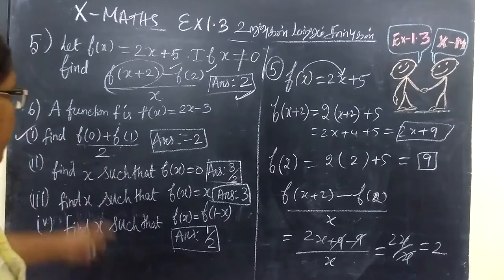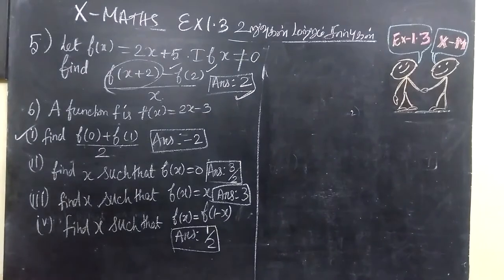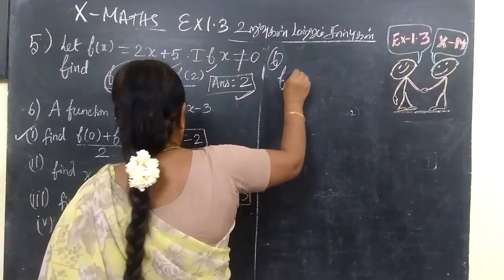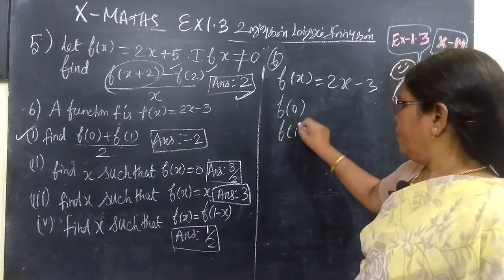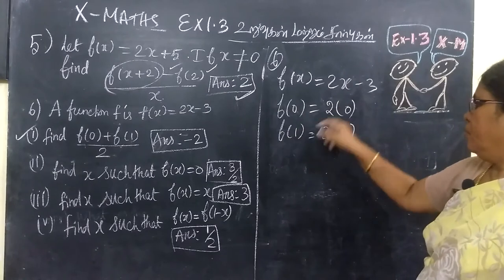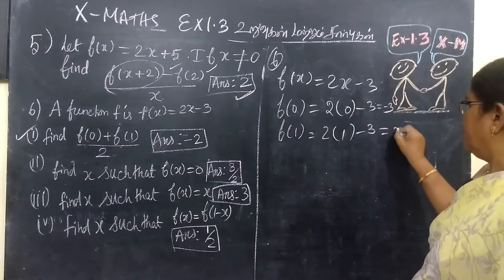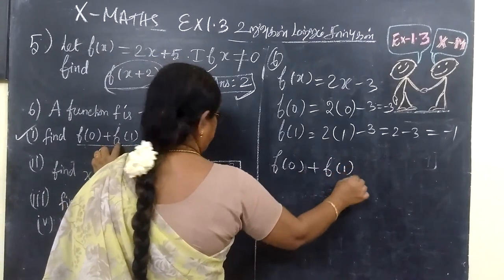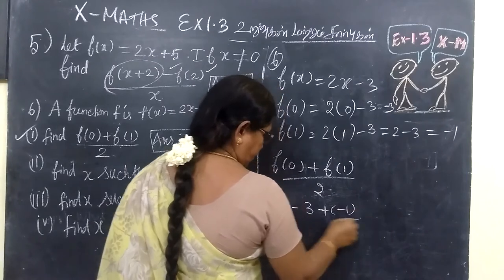Question number 3: F of s is equal to 2s minus 3. Find F of 0 and F of 1. To find F of 0, substitute s equal to 0: 2 times 0 minus 3 equals minus 3. To find F of 1, substitute s equal to 1: 2 times 1 minus 3 equals 2 minus 3 equals minus 1.